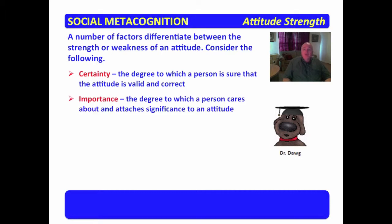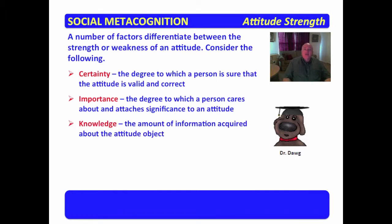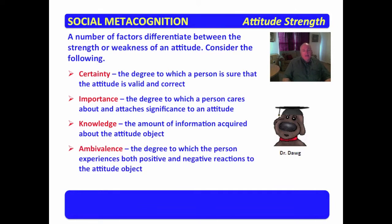Importance is the degree to which a person cares about and attaches significance to an attitude. Knowledge is the amount of information acquired about the attitude object. Ambivalence refers to the degree to which a person experiences both positive and negative reactions to an attitude object. Keep these in mind — certainty, importance, knowledge, and ambivalence — because we're going to examine each of these in regard to attitude strength.